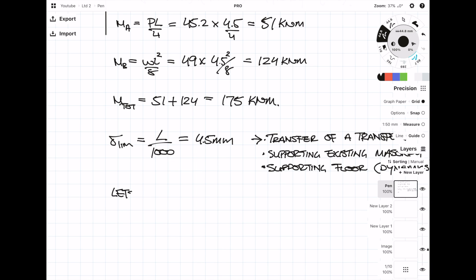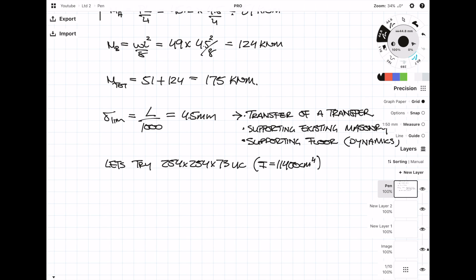I'm going to try a 254 by 254 by 73 UC, and this has an I value of 11,400 cm⁴. I'll need to calculate the deflection values for the point load and for the UDL separately and then combine them at the end. Like with the moment, I start with the point load first.